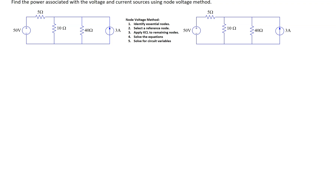The aim of this problem is to find the power associated with the voltage and current source using the node voltage method. The node voltage method is a powerful circuit analysis technique which has five main steps. Let's see how we can systematically apply these five steps to solve the circuit.